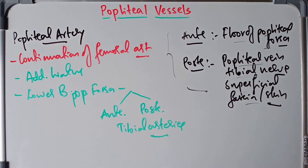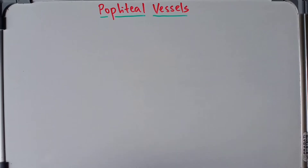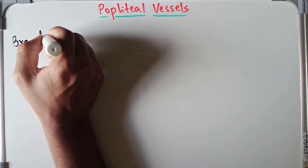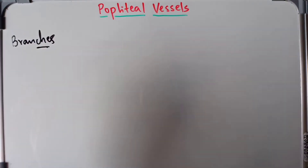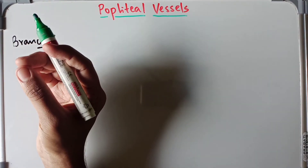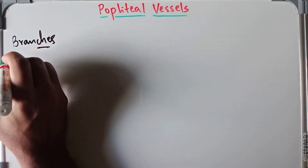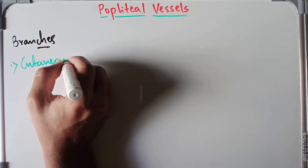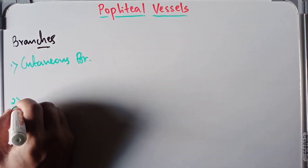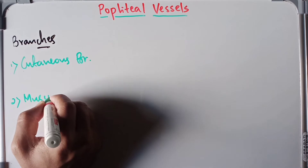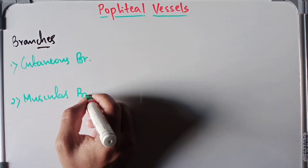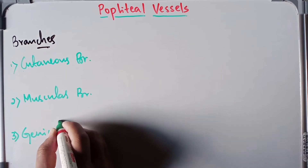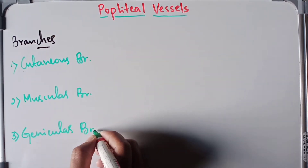Now let's discuss the branches of the popliteal artery. It gives off three types of branches: cutaneous branches, muscular branches, and genicular branches.